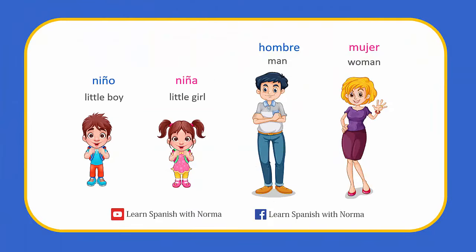Now let's practice what you just learned. In Spanish, little boy is niño; little girl is niña; man is hombre; and woman is mujer. Let's add the English definite articles — that's pretty easy, right? In Spanish, we use the definite article el for male words. So we have: el niño and el hombre. For female words we use la: la niña and la mujer.